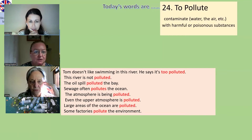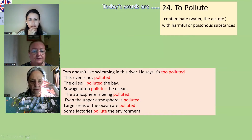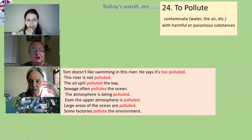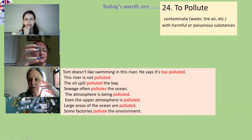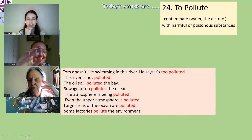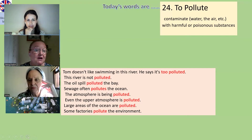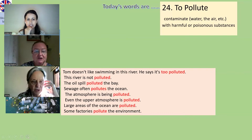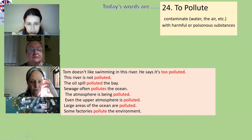Sewage often pollutes the ocean. Now, sewage is the waste that we produce — it comes out of a pipe and goes into the ocean or sea. It's all those horrible things that come from your house — a mixture of liquid and solids.